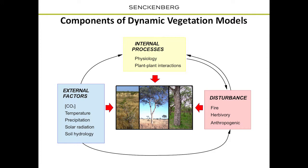Dynamic vegetation models have been discussed in previous presentations, but what we can do with them is have this mechanistic process-based understanding of ecosystem functioning. We simulate eco-physiological processes, water and carbon cycles, and plant competition. Our model uses an individual-based approach, simulating plant demography including reproduction and mortality of individual plants. We can also simulate impacts of disturbances — fire, herbivory, and anthropogenic impacts — which interact to simulate vegetation state under given environmental conditions.